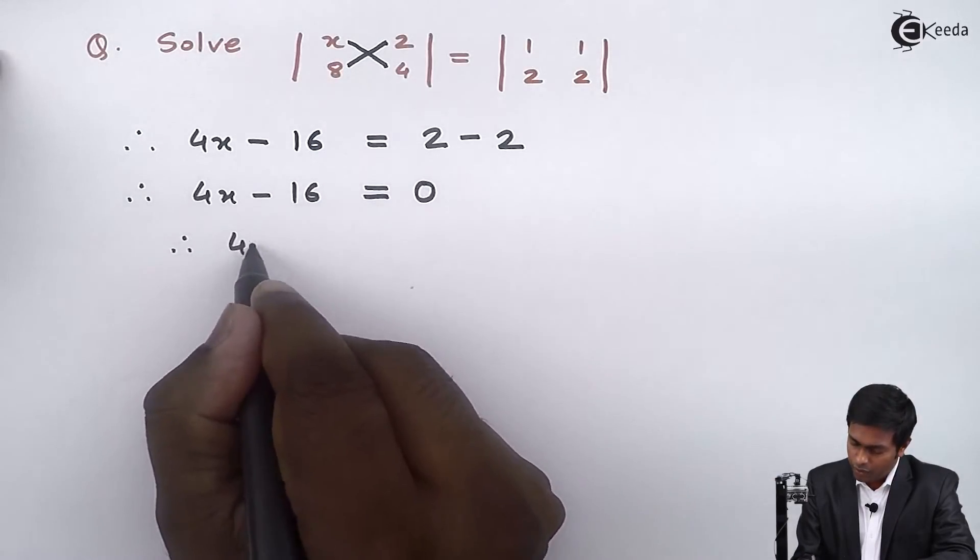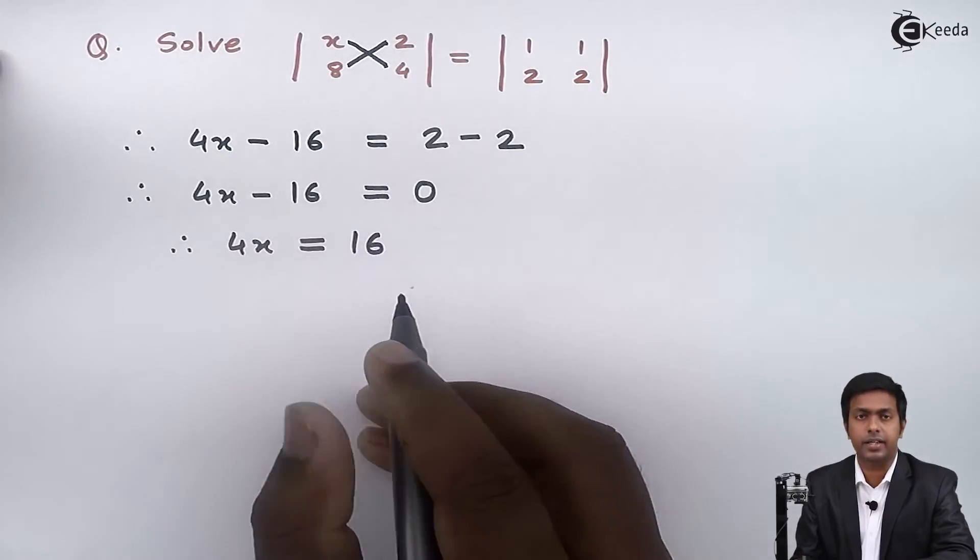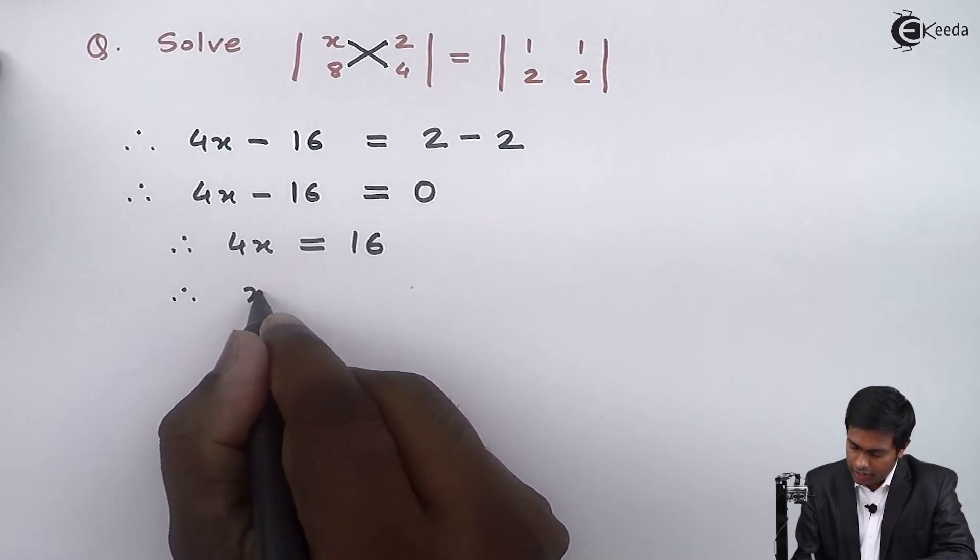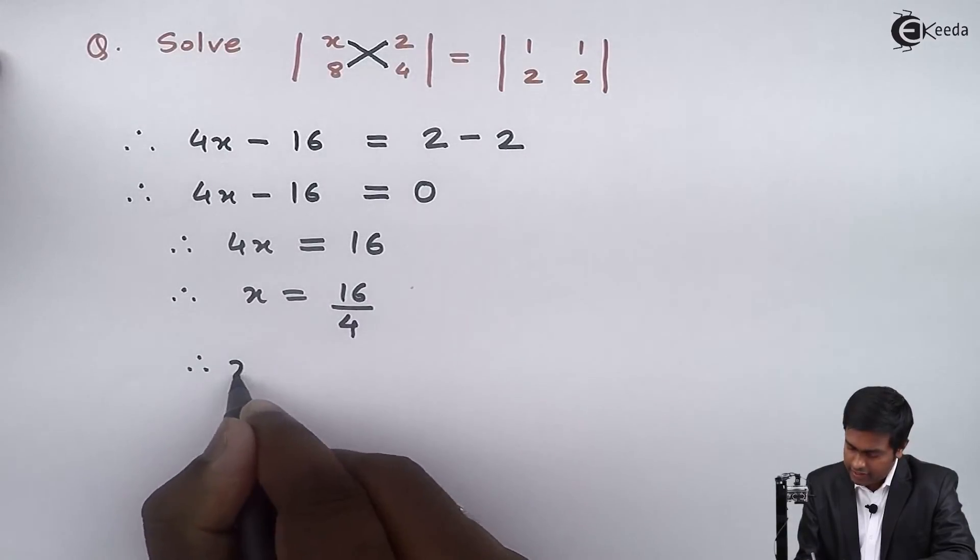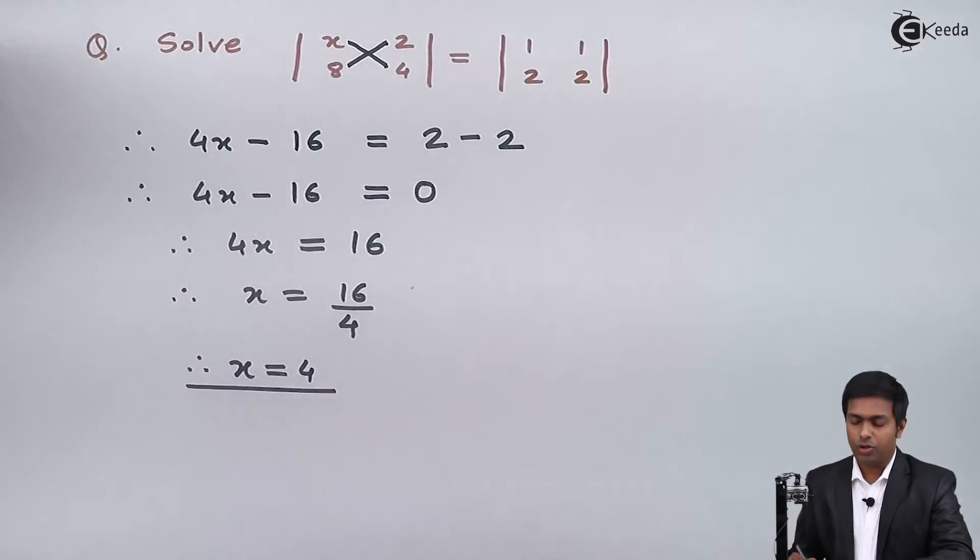Therefore 4x is equal to positive 16. So x is equal to 16 upon 4, and we can say that x is equal to 4. After evaluating it we got the value of x as 4.